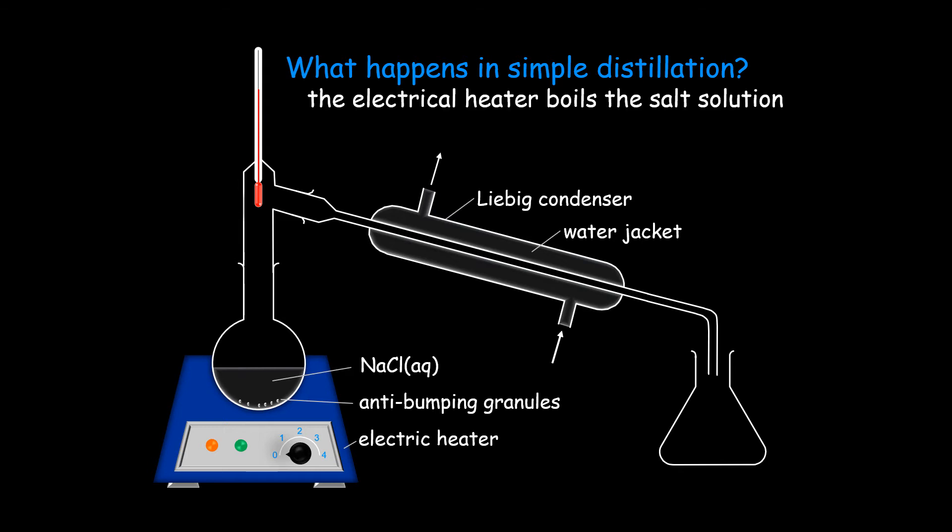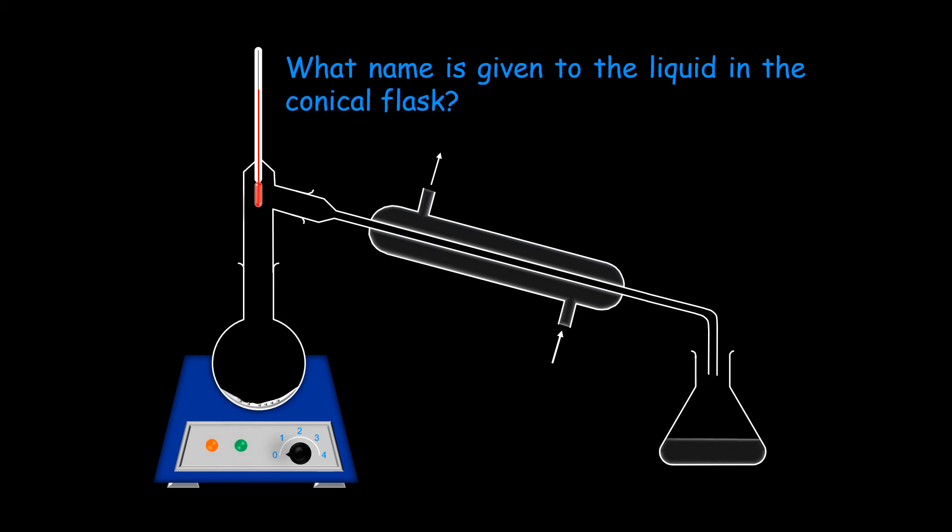The electrical heater boils the salt solution. Now our salt solution is boiling. The steam enters the Liebig condenser. The steam condenses and enters the receiver flask. The liquid is called the distillate and it's just pure water in this experiment.